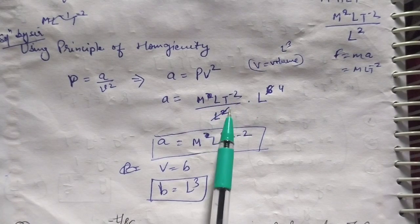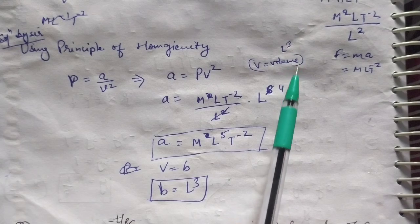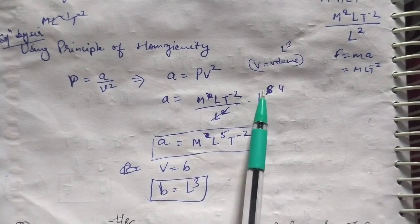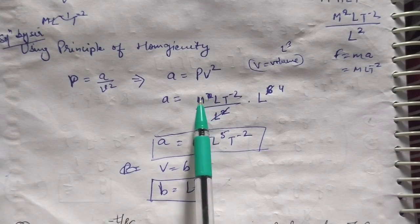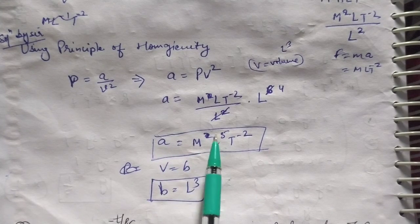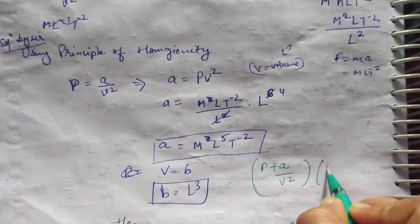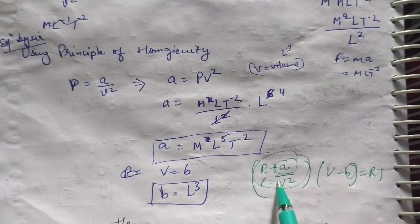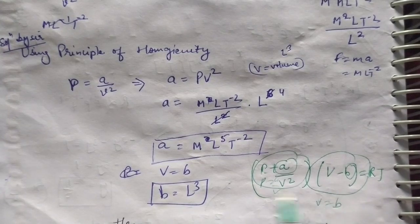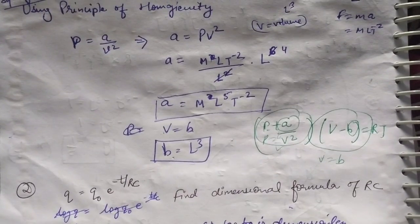Pressure dimension is ML⁻¹T⁻². Volume dimension is L³, so v² is L⁶. Therefore the dimension of a = ML⁻¹T⁻² × L⁶ = ML⁵T⁻². Now from the relation (p + a/v²)(v − b) = RT, using principle of homogeneity, v equals b, so b has the same dimension as volume, which is L³. So the dimension of b is L³.